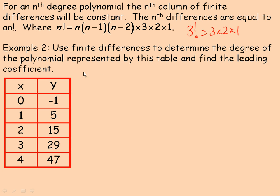In the example here, we're asked to use finite differences to determine the degree of the polynomial represented by this table, and then find the leading coefficient. First, make sure the x-values are in order — 0 to 4, and they are. Then look at the differences between the y-values: from negative 1 to 5 goes up by 6; 15 minus 5 is 10; 29 minus 15 is 14; and 47 minus 29 is 18. Those are how much y is changing as you go from point to point.